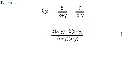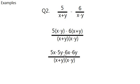And now, all we need to do is to expand the top but not the bottom because we don't need to. We know that this is a difference of two squares and there aren't much that we can do with it. So we'll just keep it like that. And after you expanded the bracket, you should have something that looks like this: 5x minus 5y minus 6x minus 6y over x plus y, x minus y. So that is what you get and now we have to collect like terms.